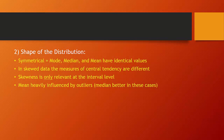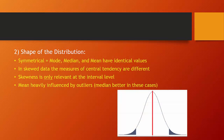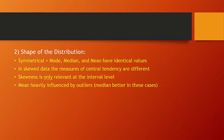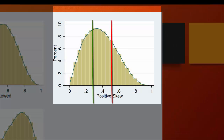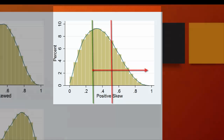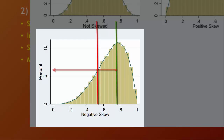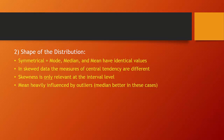Understanding the mean, median, and mode helps us understand the shape of the distribution. In a truly symmetrical distribution, the mode, median, and mean all have identical values. In skewed data, the measures differ. The mean is heavily influenced by extreme outliers — when the mean is higher than the median, the long tail is pulled in a positive direction; when lower, it's pulled in a negative direction.